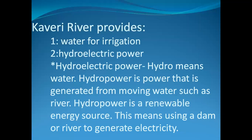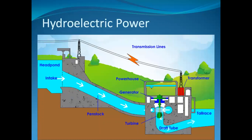Kaveri river provides water for irrigation and hydroelectric power. Hydro means water — hydropower is the power generated from moving water, such as a river, and is a renewable energy source. This means using a dam or river to generate electricity. An animation shows how water flows and is transformed into electricity.